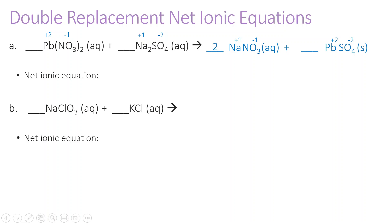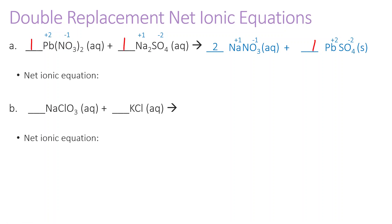I have two nitrates and two sodiums, so I'm going to put a two in front of sodium nitrate. That gives me two sodium, two nitrate, and then one lead and one sulfate on each side — so this is now balanced. Now I look for things unchanged on both sides: nitrate starts as aqueous and ends as aqueous, sodium starts as aqueous and ends as aqueous. So the only thing that actually reacted was lead plus two with sulfate minus two to form lead sulfate solid.